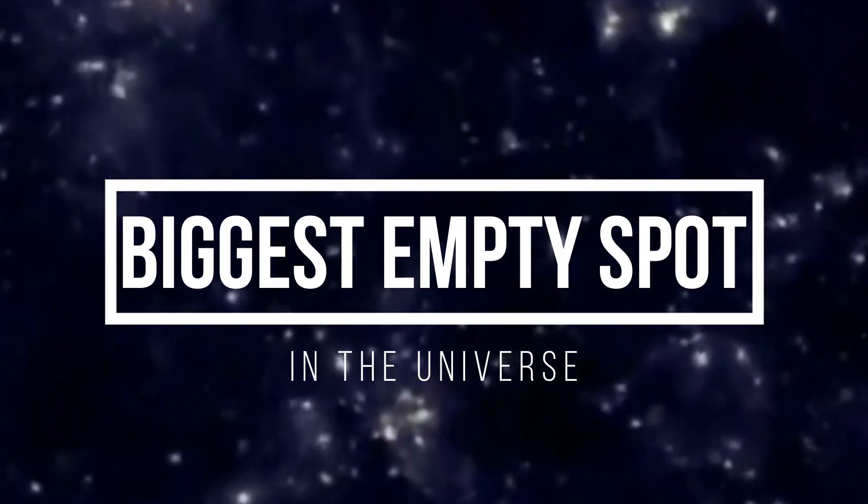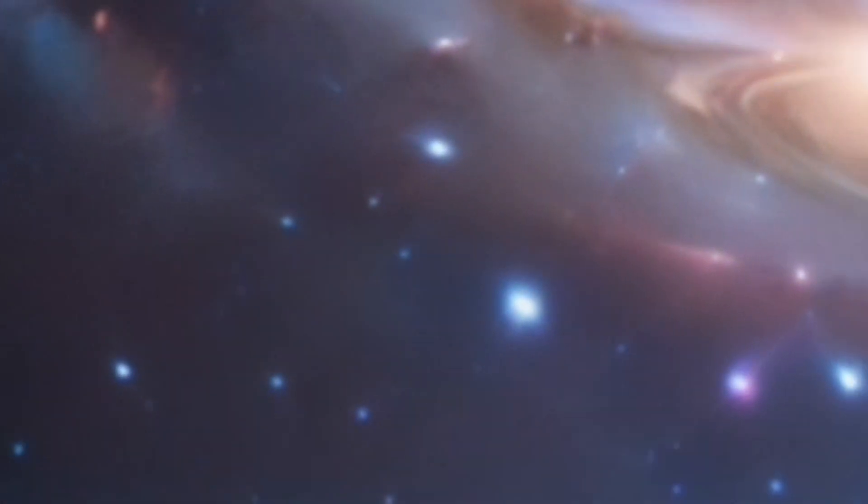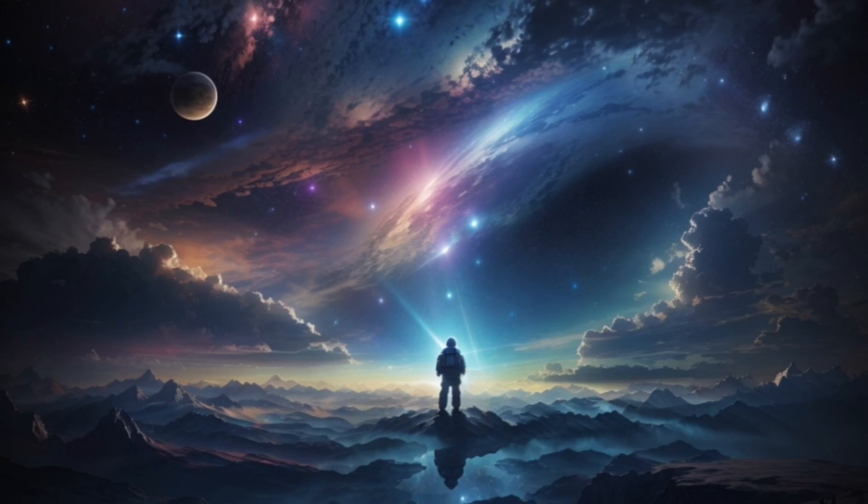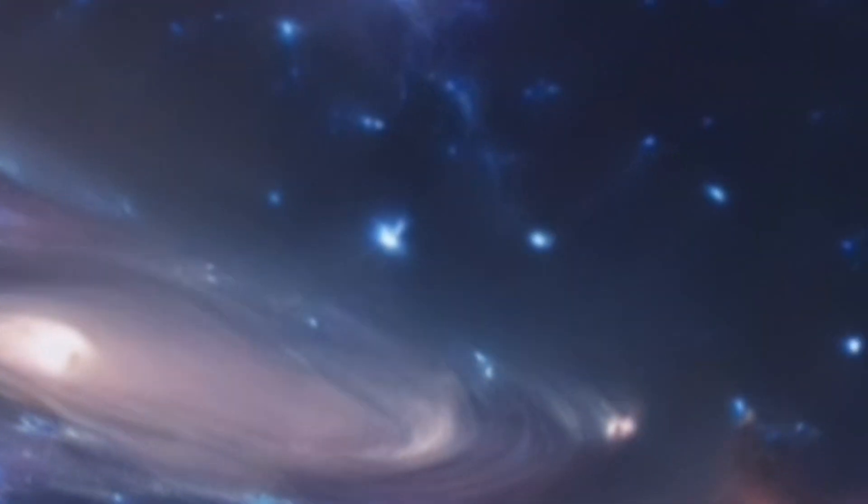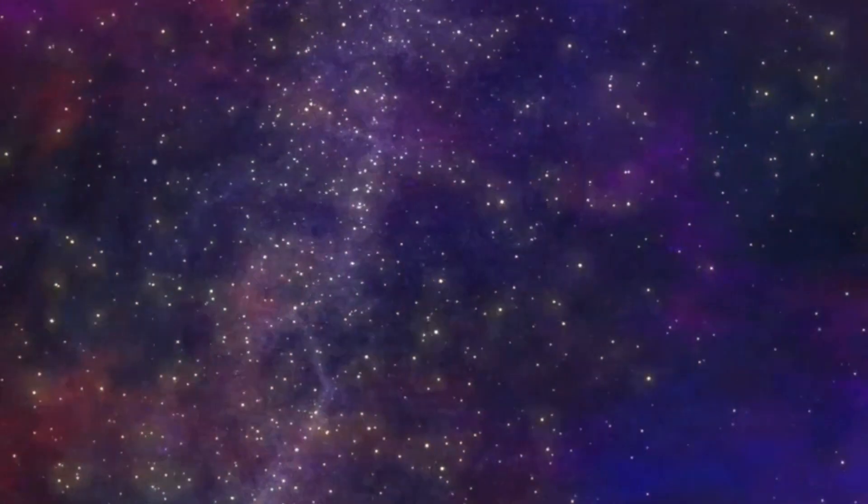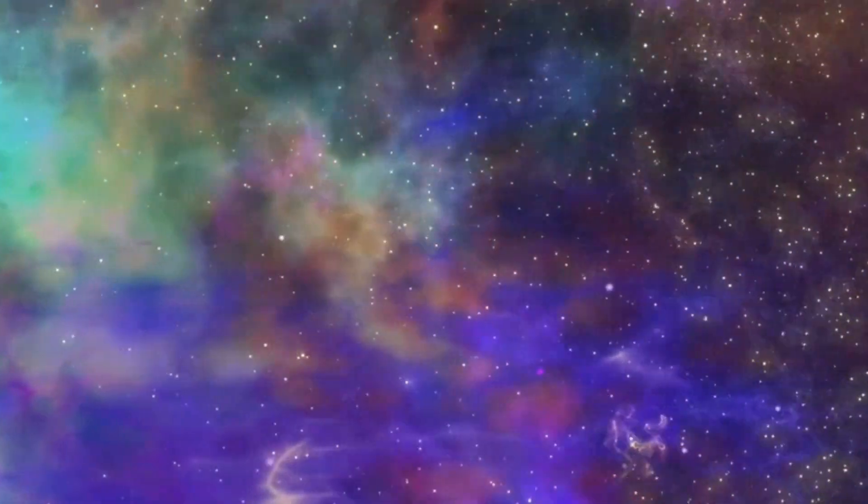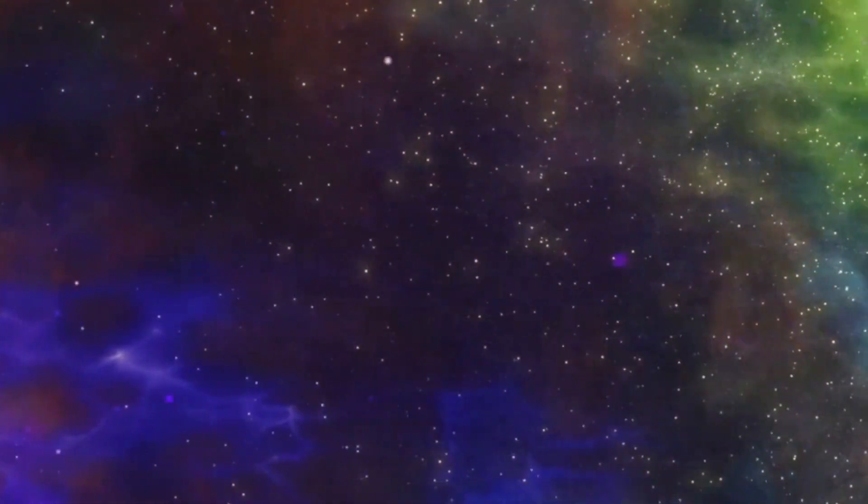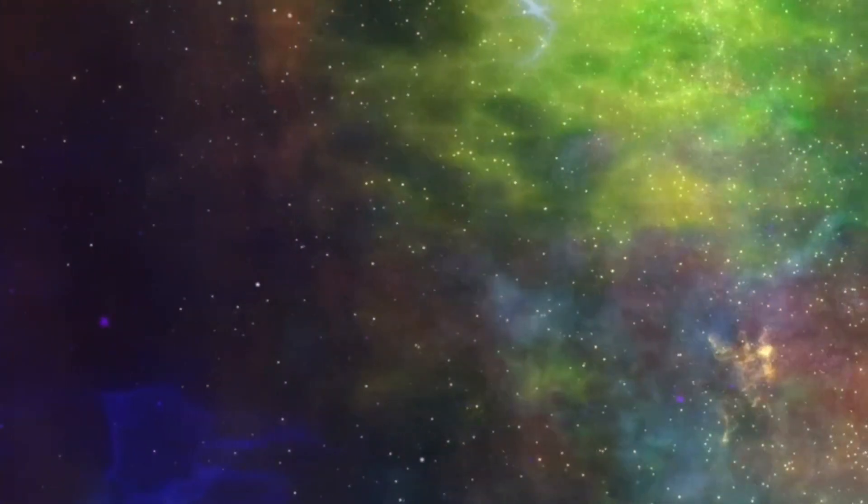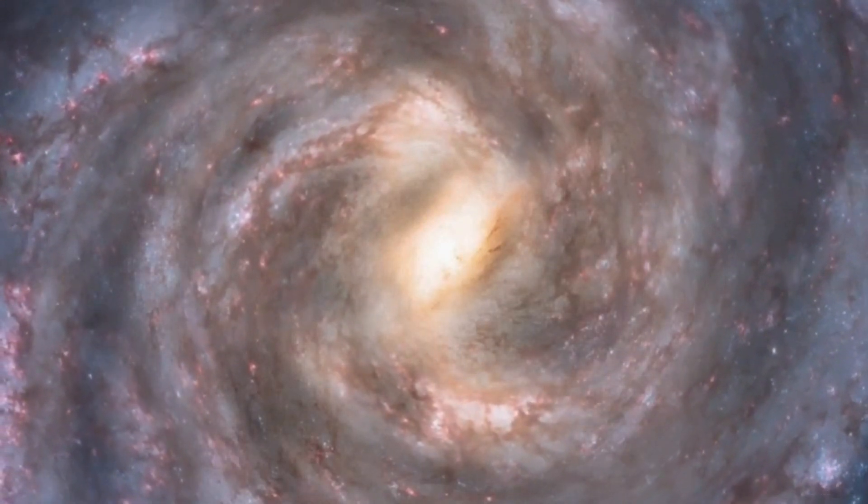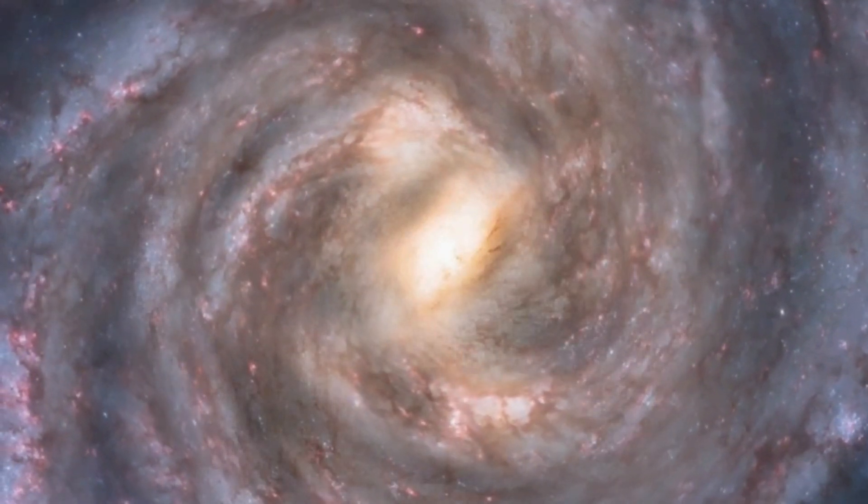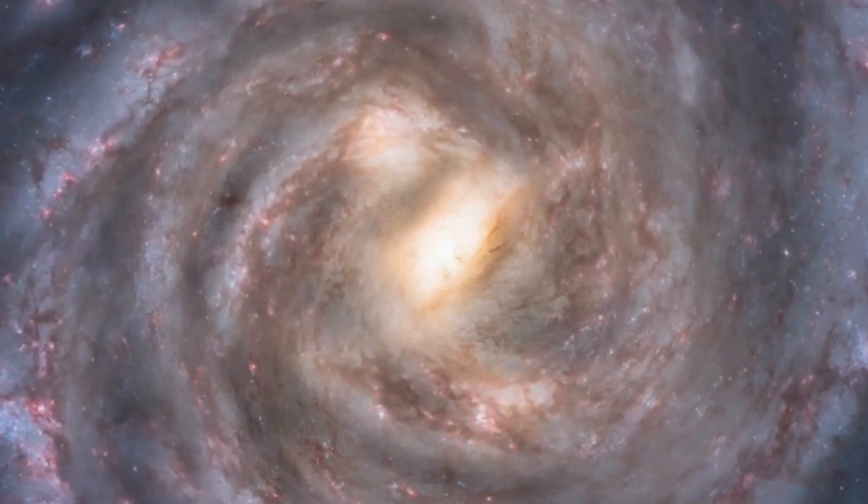The largest known cosmic void, often referred to as the Boötes Void, is a vast expanse of seemingly empty space in the universe. Situated in the constellation Boötes, this void is a region characterized by an unusually low density of galaxies and cosmic matter. It spans about 330 million light-years in diameter, making it one of the most substantial cosmic voids ever observed. Despite its immense size, the Boötes Void is not entirely devoid of matter. Instead, it contains a sparse distribution of galaxies and a scattering of cosmic filaments, but these structures are much less concentrated compared to other regions of the universe.